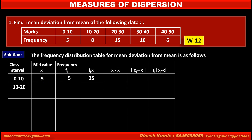The second class interval is 10 to 20. Therefore its mid-value is (10 + 20) / 2 = 30 / 2 = 15. The frequency of this class interval is given as 8. Therefore the product fi·xi is 15 × 8 = 120.